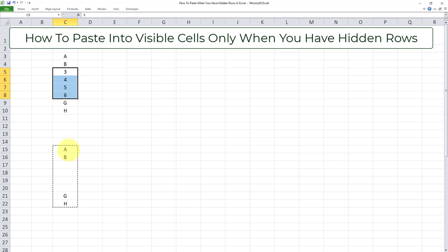So we were able to copy only the cells that we wanted into the visible cells only. And this is how we get this done.